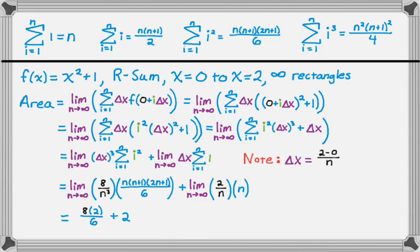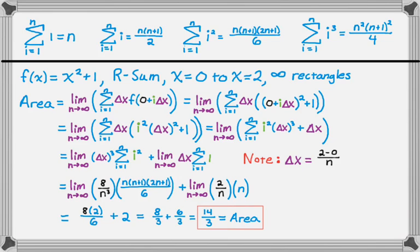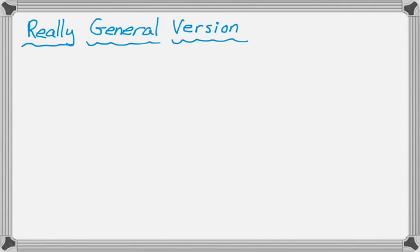So I get 8 times 2 over 6, plus 2, which is 8 over 3 plus 6 over 3, which is 14 over 3 — the exact value of the area. You might recall from the previous video that that's exactly what I got when I took the limit on my calculator for both the left and right Riemann sums. So now I've done it by hand, which is kind of neat. Obviously we want to find a better way to do this, but we haven't yet.